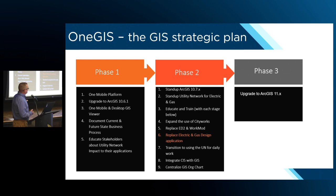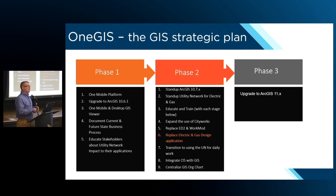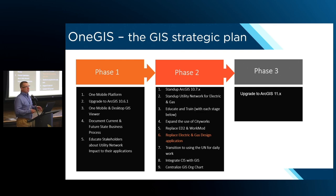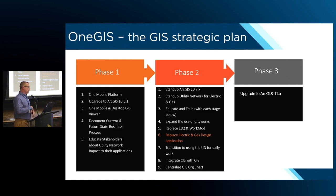I put together a plan I called OneGIS, which aligned with an IT initiative at that time called OneSAP — about expanding SAP products throughout the organization. I wanted to expand GIS throughout the organization; it had always been considered a niche application under engineering, not really looked at as an enterprise solution. Phase one was really just laying the foundation: get to a supported version, get everybody on a single mobile platform, one mobile viewer, and one brand of laptops — because everybody had different laptops with different capabilities, some without GPS, Bluetooth, or Wi-Fi.